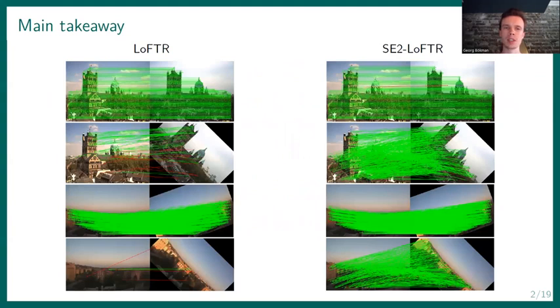So what we did in this paper was taking a state-of-the-art feature matcher, LoFTR, and exchanging the backbone CNN to be rotation equivariant. And what happened was that the performance on the original data remained very good and the performance on rotated data became a lot better than the original LoFTR.